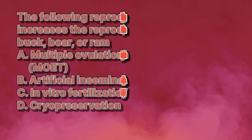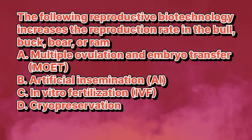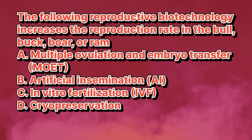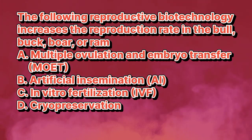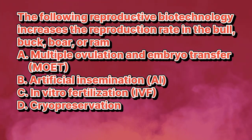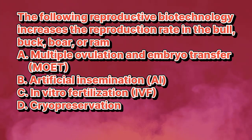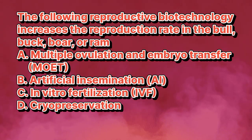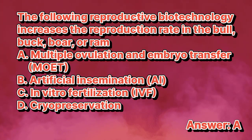Which reproductive biotechnology increases the reproduction rate in the bull, buck, boar, or ram? A. Multiple Ovulation and Embryo Transfer or MOET. B. Artificial Insemination or AI. C. In Vitro Fertilization or IVF. D. Cryopreservation. The answer is letter A.